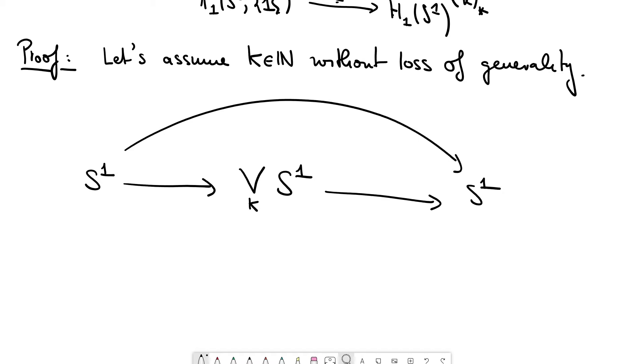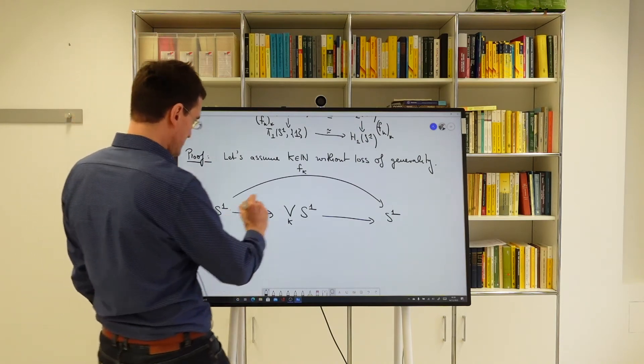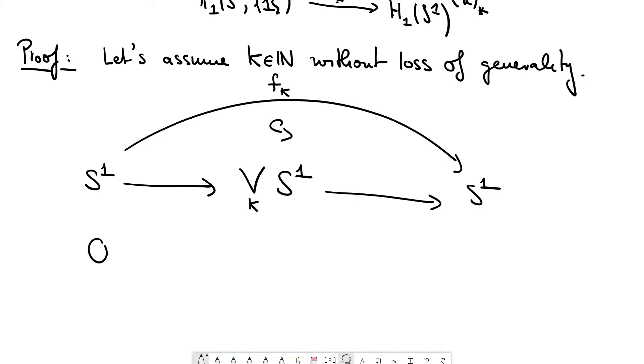So here's the factorization, here is f_k. What does f_k do? It wraps around S^1, k times around the circle. And what you can do instead is first going to this wedge of circles, where you have, let me draw it for k equals 3. So what is the map? The map is, if I move around here and look at the image points, then what I see is this. So I go around each circle successively like that. This is the first map here.